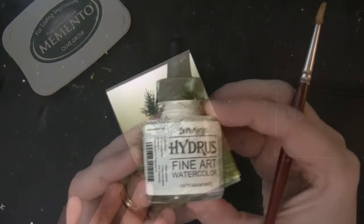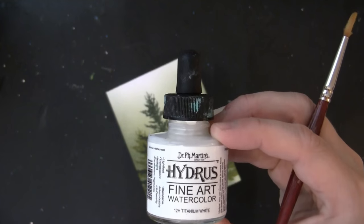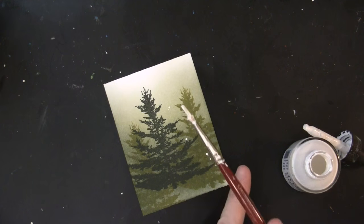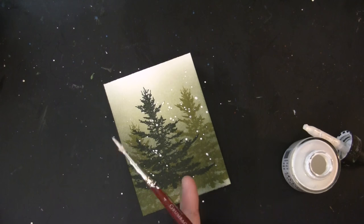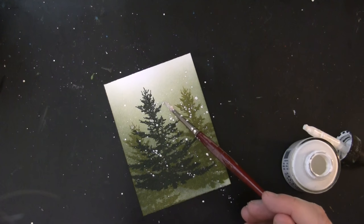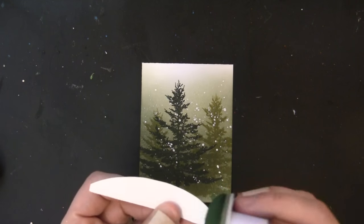Now I definitely needed to add some snowflakes to this background, and I'm using the Dr. P. H. Martin's Hydrus Water Colors, and this is the Titanium White Color. And I just dip my paintbrush in there and splatter away, and this is just a really easy way to add those snowflakes to the background. I had just a clump there I was picking up with the brush, and I let that dry.